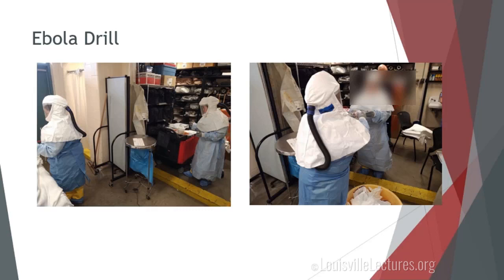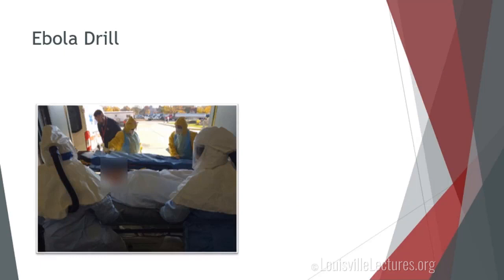Once the laboratories are drawn and placed in appropriate containers and decontaminated, they're given to the other nurse, packaged in special equipment, and then transported by state police to the lab in Frankfort. Fast forward to the determination that this person has Ebola virus disease — the EMS personnel in yellow isolation PPEs are ready to move the patient to their gurney, take them to their ambulance, and transport them to Georgia.